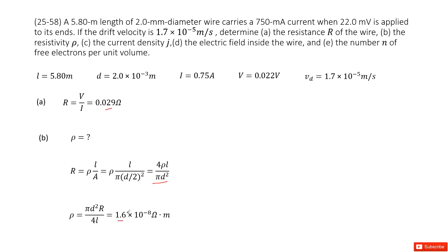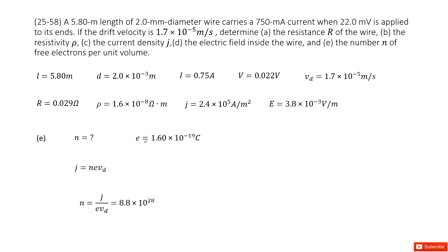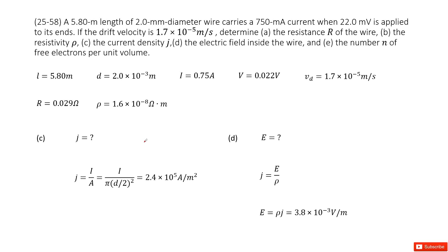Next, we need to find the current density J. Using the definition, J equals current divided by cross-sectional area π r squared, where r equals diameter over 2. Input all the given quantities to get the answer.